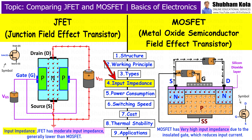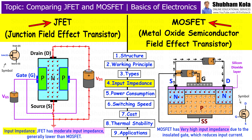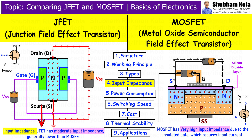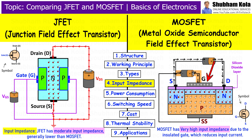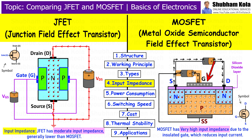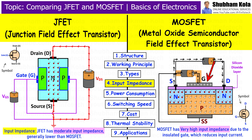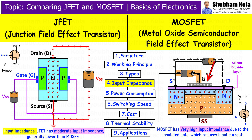Next is input impedance. In terms of input impedance, JFET and MOSFETs have significant differences. JFETs have high input impedance. MOSFETs also have extremely high input impedance. The insulated gate ensures that there is no current flowing into the gate, which results in even higher input impedance compared to JFETs. This is why MOSFETs are preferred in high-impedance applications.